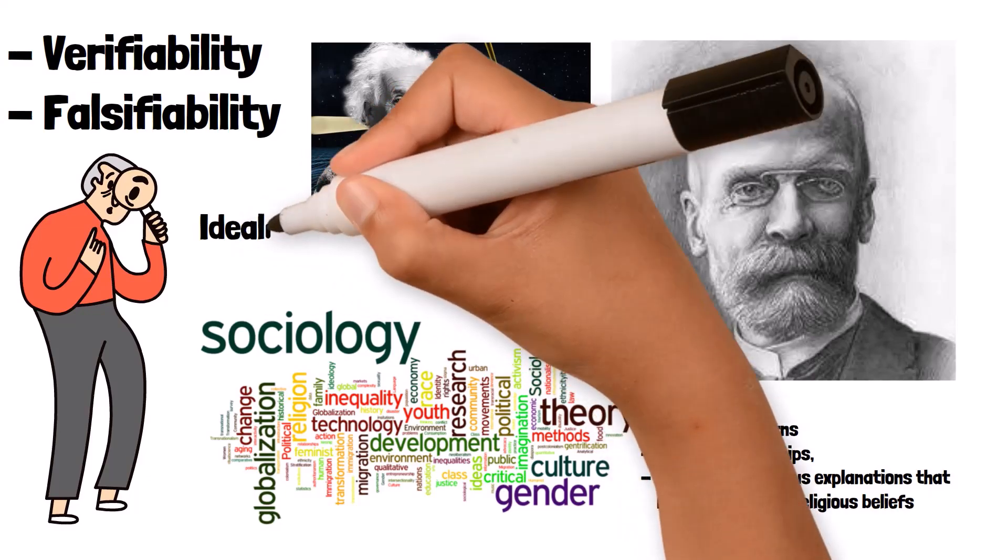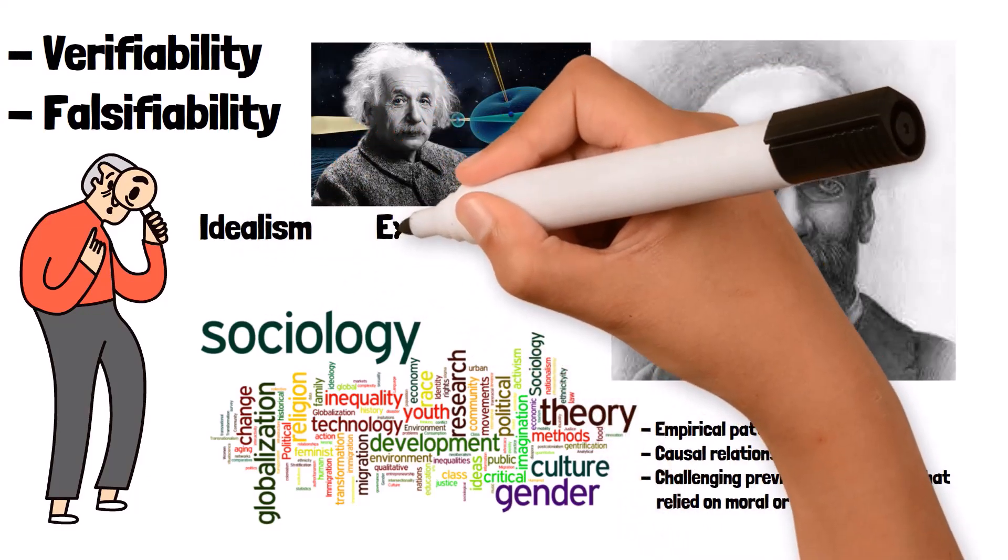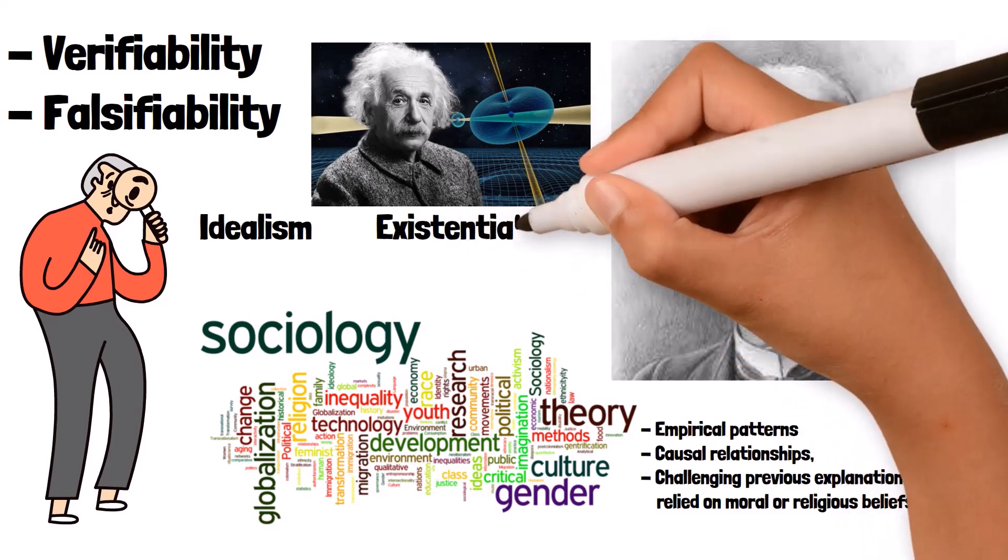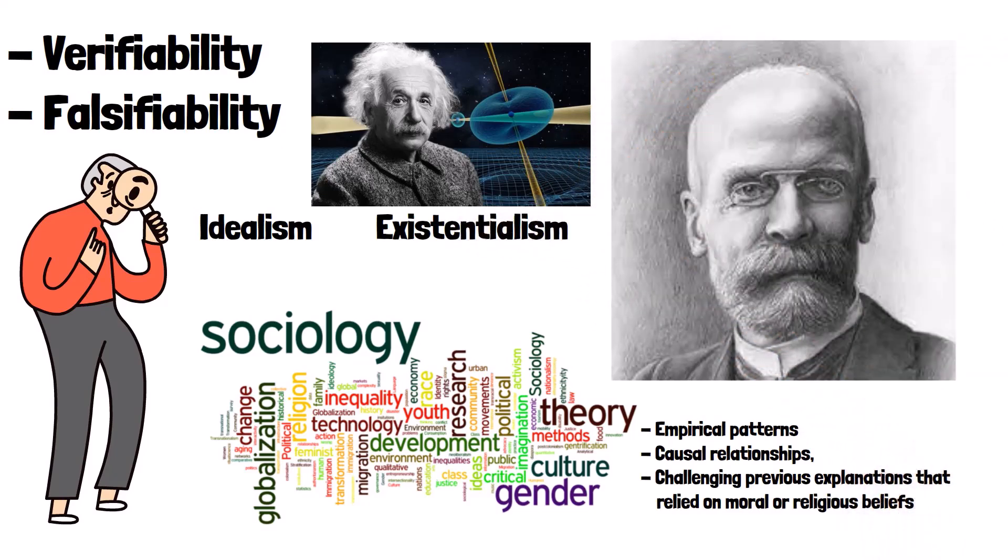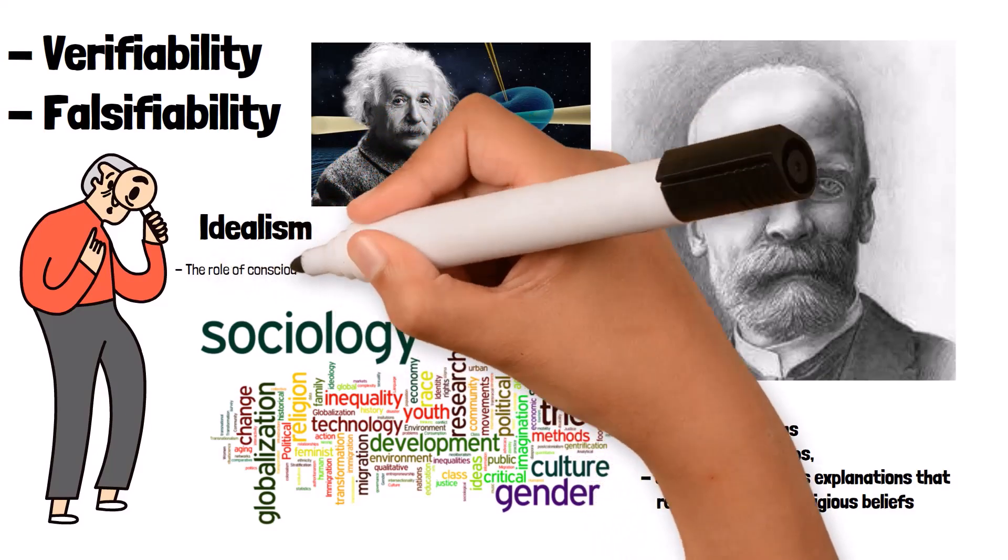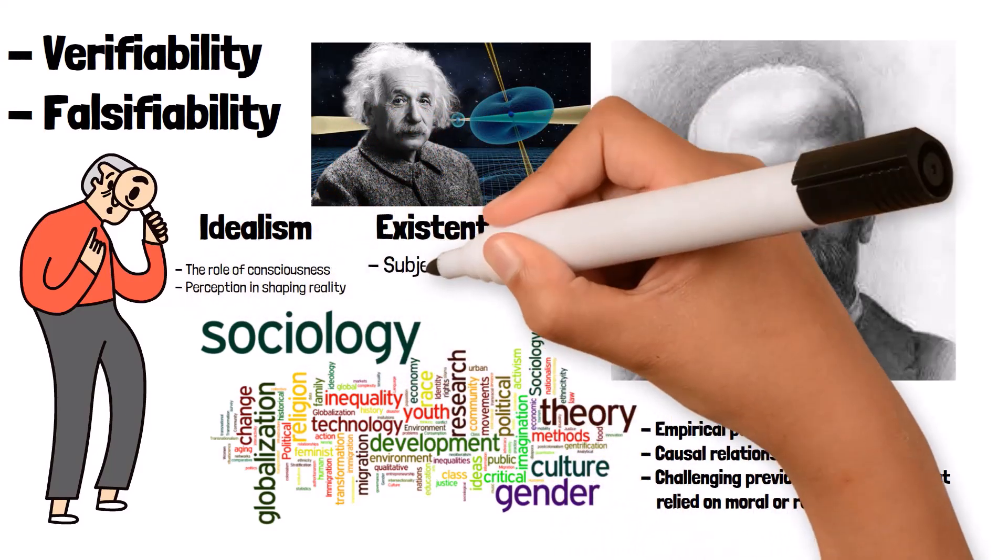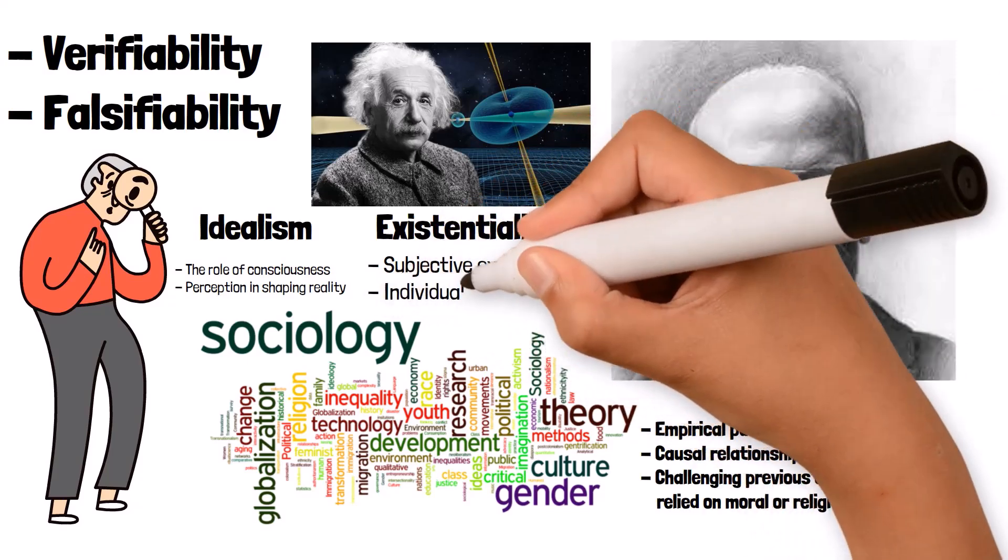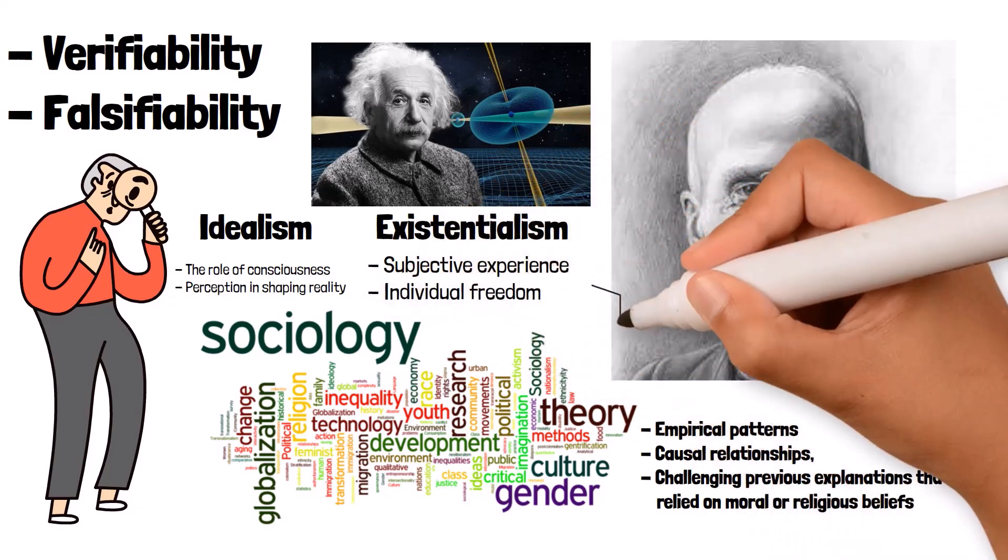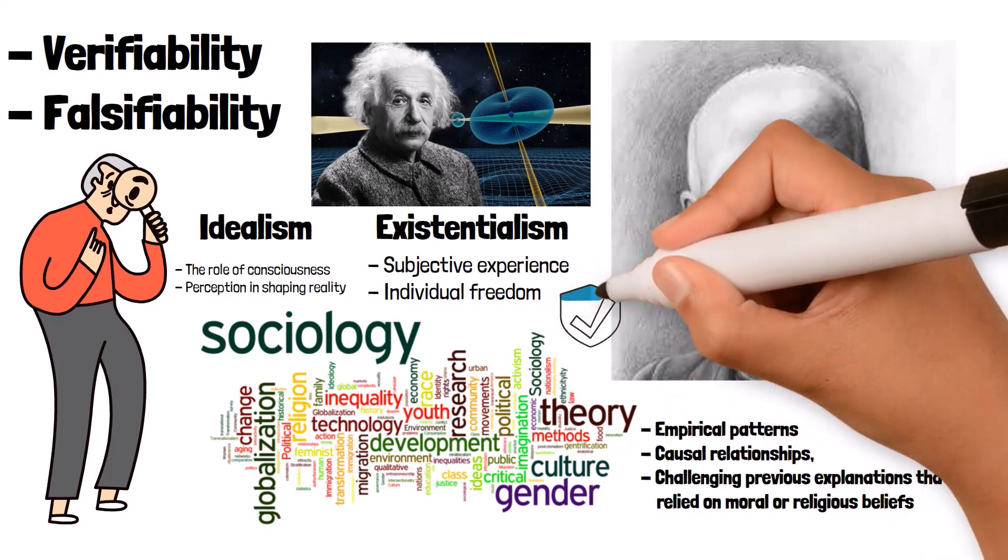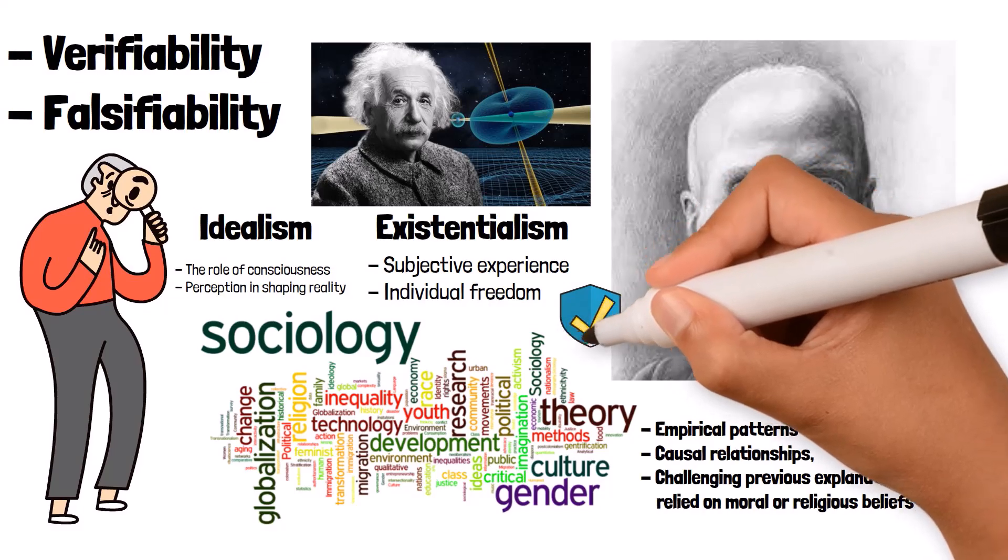Understanding positivism helps us appreciate its contrast with other philosophical approaches such as idealism or existentialism. While idealism focuses on the role of consciousness and perception in shaping reality, and existentialism emphasizes subjective experience and individual freedom, positivism prioritizes objective, measurable evidence and the systematic application of scientific methods.